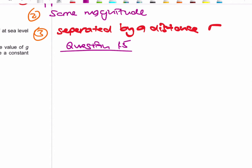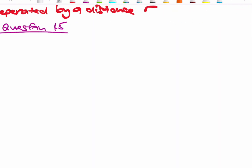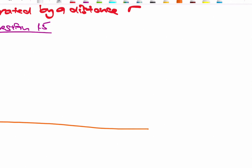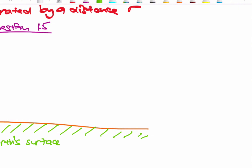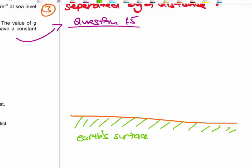Let's start at the ground — the surface of the earth. The pressure at the earth's surface is 100,000 Pascals. What does pressure on the earth mean? The earth has an atmosphere, that atmosphere has air, and air has weight — and that weight causes pressure.